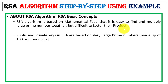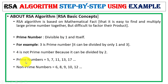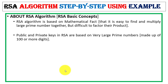Public and private keys in RSA are based on large prime numbers. The prime numbers used can be made up of a hundred or more digits. A prime number can only be divided by one or itself — for example, 3 is prime because it is divisible only by 1 and 3, while 4 is not prime because it can be divided by 2. Examples of prime numbers are 5, 7, 11, 13, 17, and non-prime numbers include 6, 8, and 9.